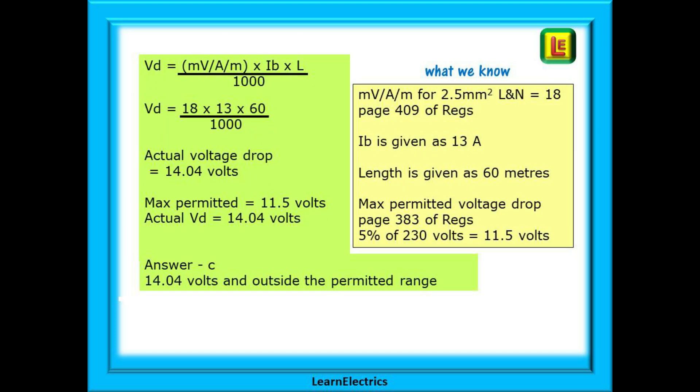The yellow box on the right has all the information that we know or have been given. On page 383 of the wiring regulations we find that the maximum permitted voltage drop is 5% of 230 volts for a non-lighting circuit and this is 11.5 volts. You should be familiar with the formula shown. This is the standard formula for calculating voltage drop.